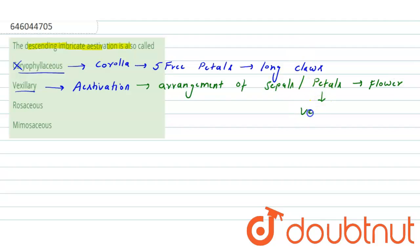And in this, the type of vexillary aestivation is also called descending imbricate aestivation. Because in this type of aestivation, the posterior petal overlaps one margin of the two lateral petals. Another margin of such two lateral petals overlaps the two anterior petals that are united.